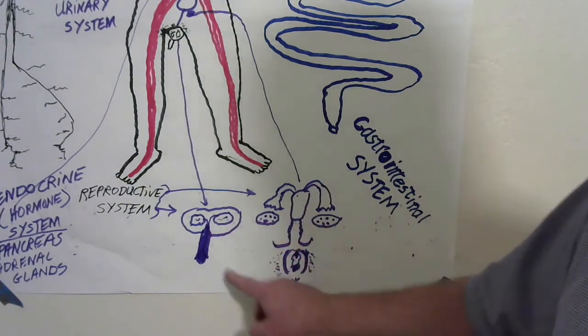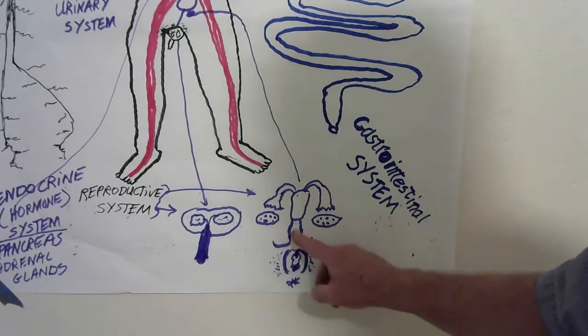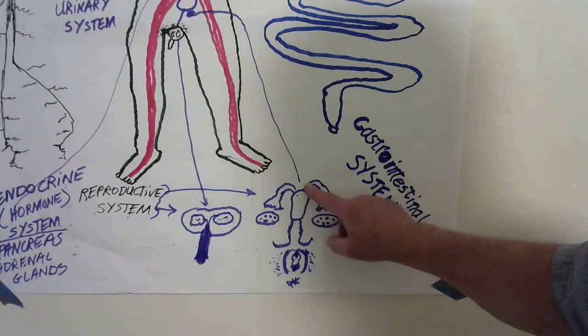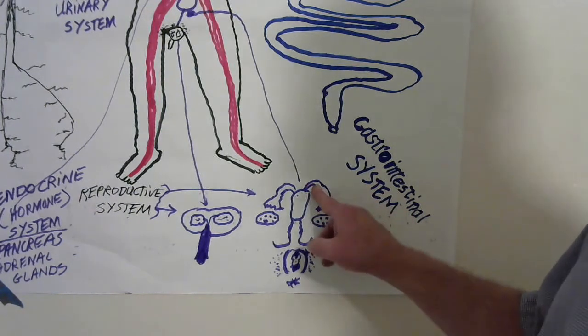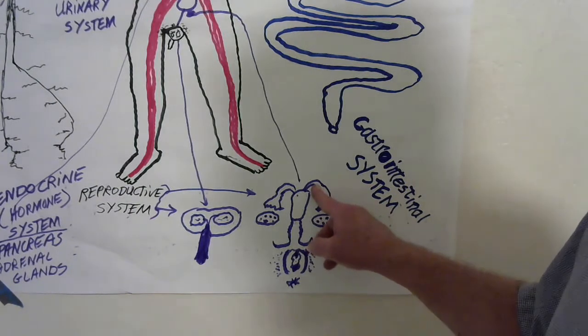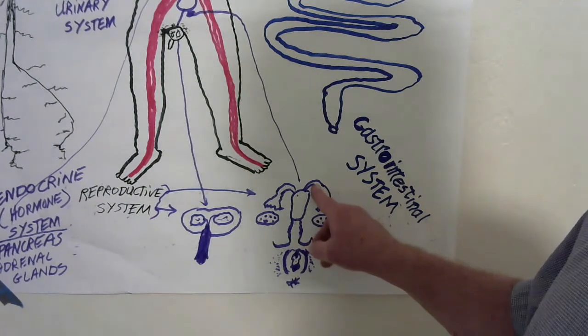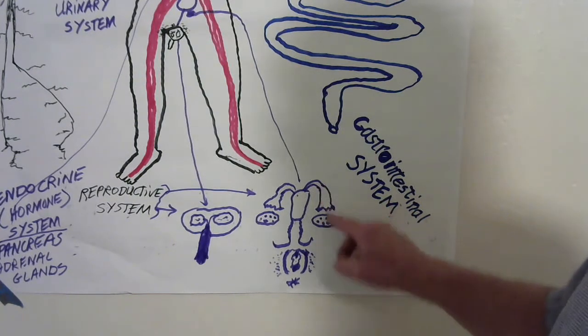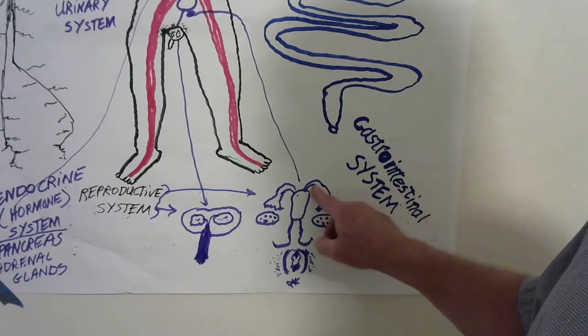The sperm from the man enters the vagina, goes up through the uterus into the fallopian tube, and conception occurs in the fallopian tube where the sperm meets the ovum. Women's eggs are called ovums or oocytes. They meet the sperm.